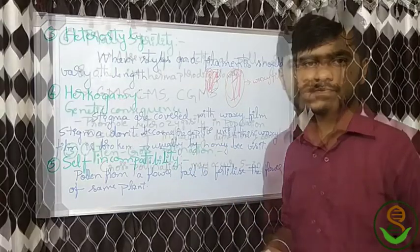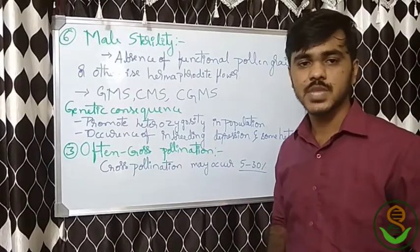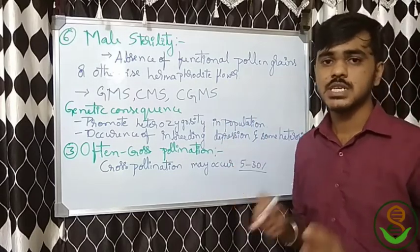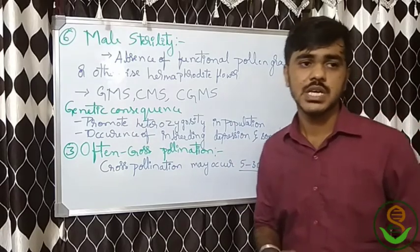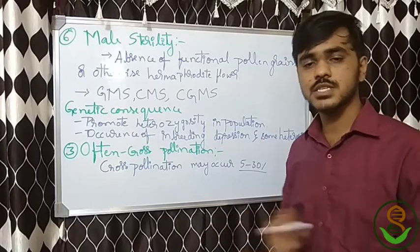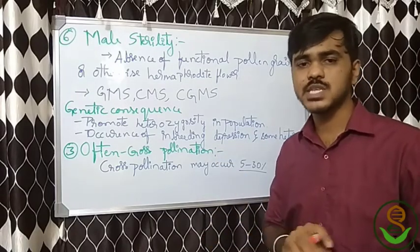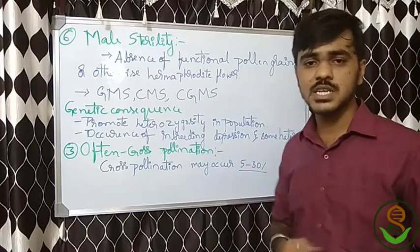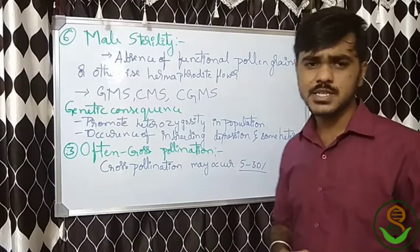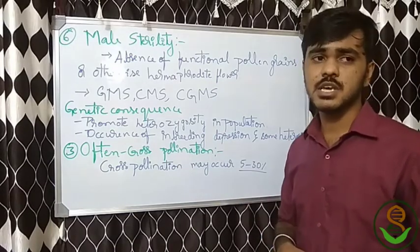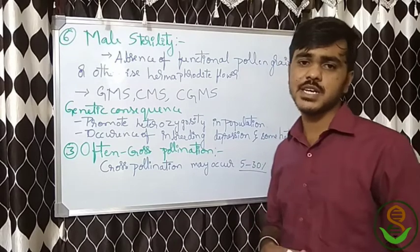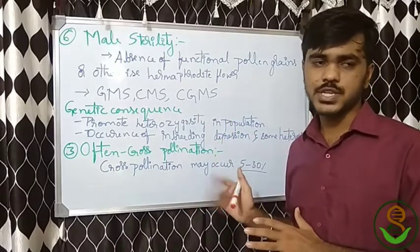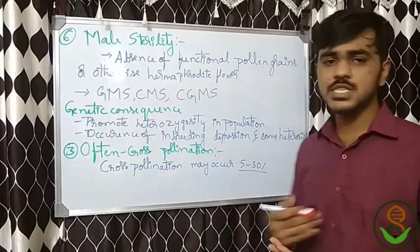Next comes male sterility — the absence of functional pollen grains, or a condition where hermaphrodite flowers are present but not functional. The pollen is not functional in nature, or even the hermaphrodite flower is not functional, and it needs a pollen source from other plants. Such a condition is called male sterility. We will have a detailed class further covering the processes GMS, CMS, and CGMS — that is genetic male sterility, cytoplasmic male sterility, and cytoplasmic-genetic male sterility.